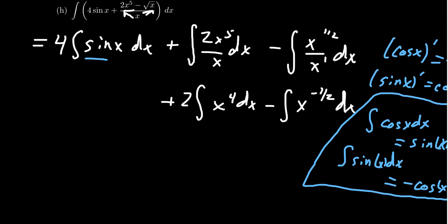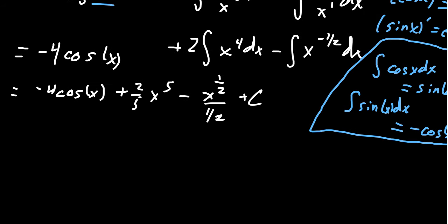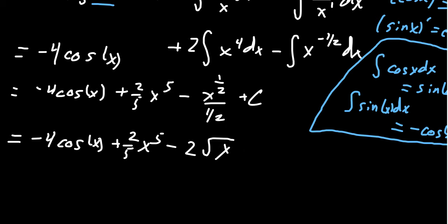Let's finish this problem. The antiderivative of sine is -cos(x), so we get -4cos(x). Then the antiderivative of x⁴ gives us (2/5)x⁵. And then for x^(-1/2), adding one to the exponent gives x^(1/2), and dividing by 1/2 multiplies by 2, so we get -√x. In the end, our antiderivative is: -4cos(x) + (2/5)x⁵ - 2√x + C. You could leave it as the 1/2 power if you prefer.